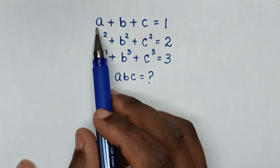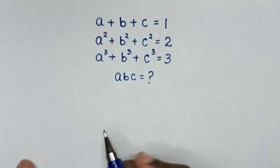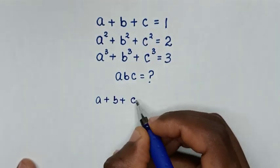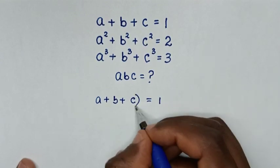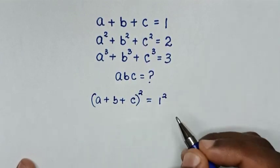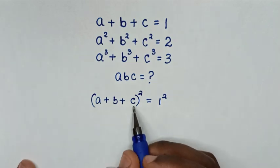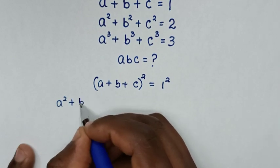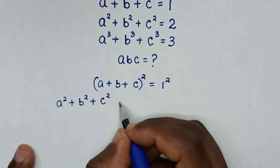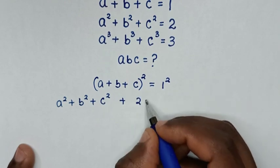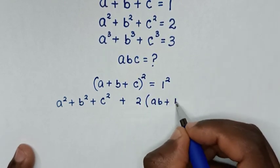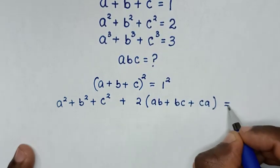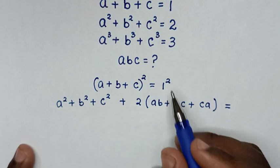In the first step, from a plus b plus c equals 1, we square both sides. The expansion of (a plus b plus c) squared equals a squared plus b squared plus c squared, plus 2(ab plus bc plus ca), and that equals 1 squared, which is 1.